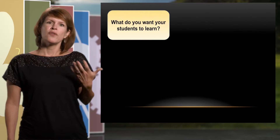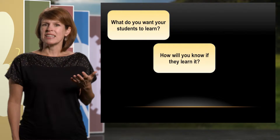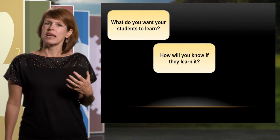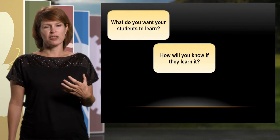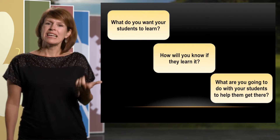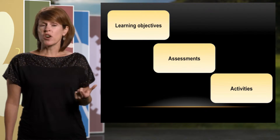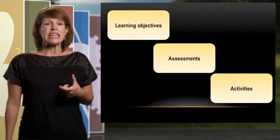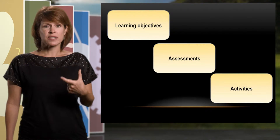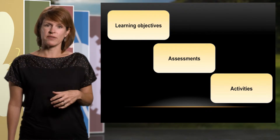As with any course, you'll want to begin by considering the key features of backwards design. First, consider what you want your students to learn. Then think about the type of evidence that will let you know how well they meet those learning objectives. And then let those decisions guide what it is you have your students do. In other words, start by identifying your learning goals and objectives, then use those to drive your assessments and let decisions about those determine what activities you have your students do.